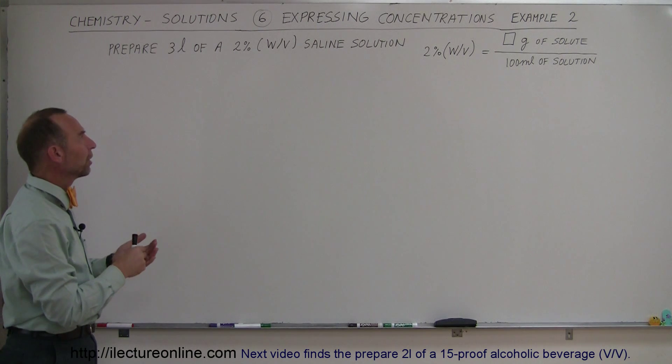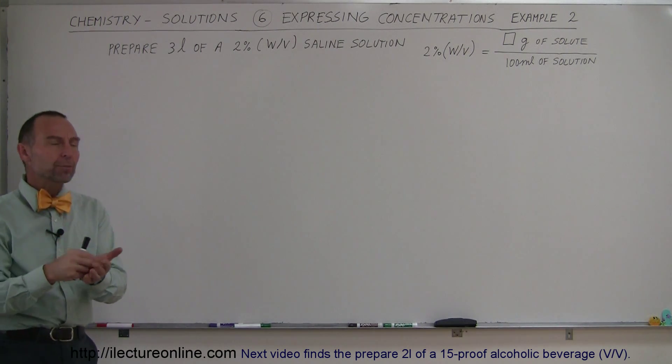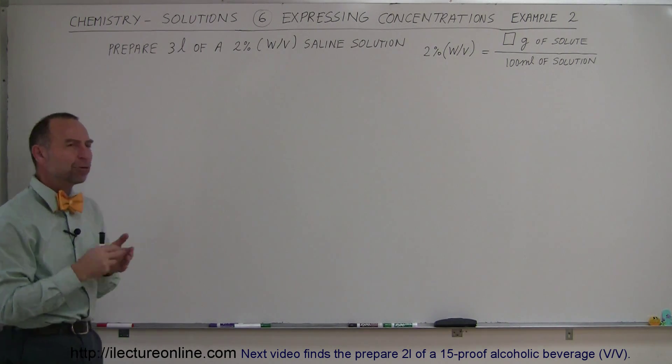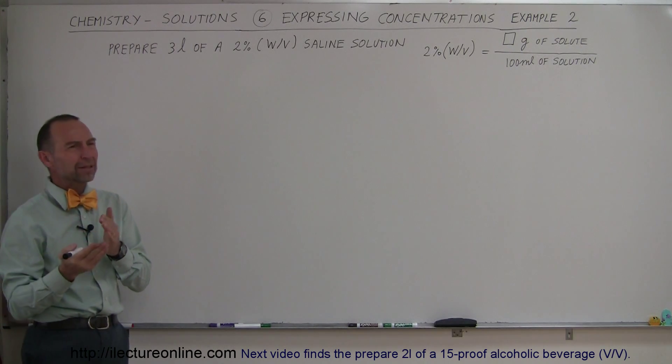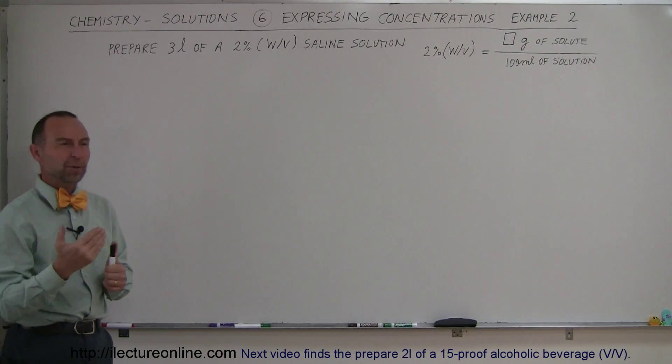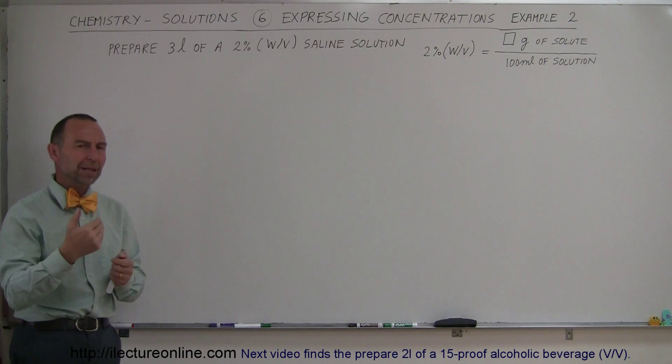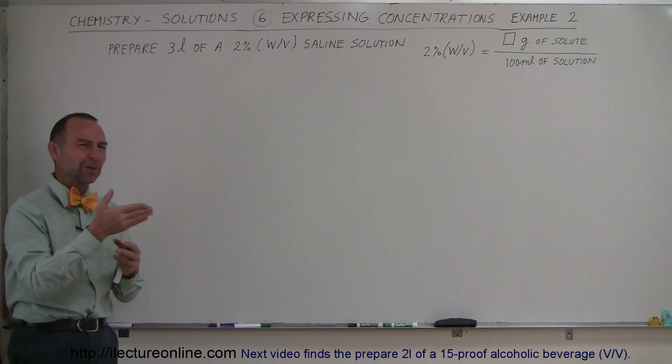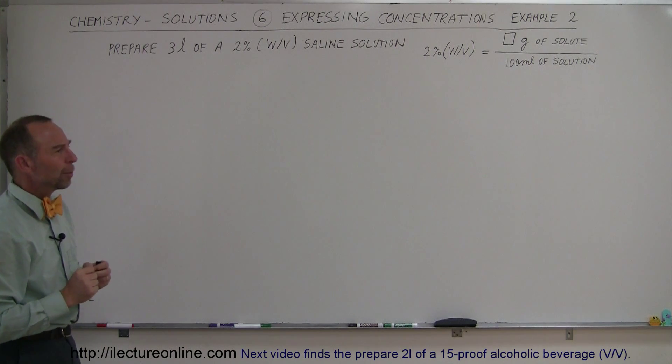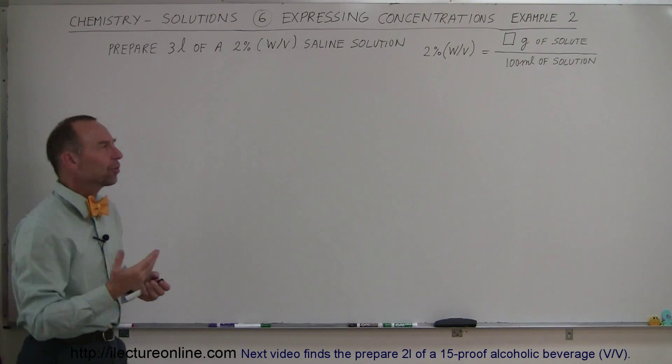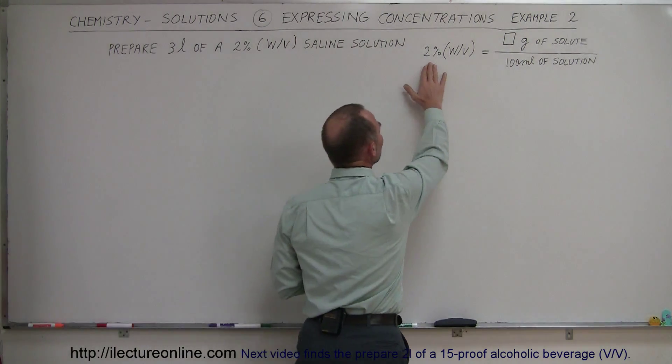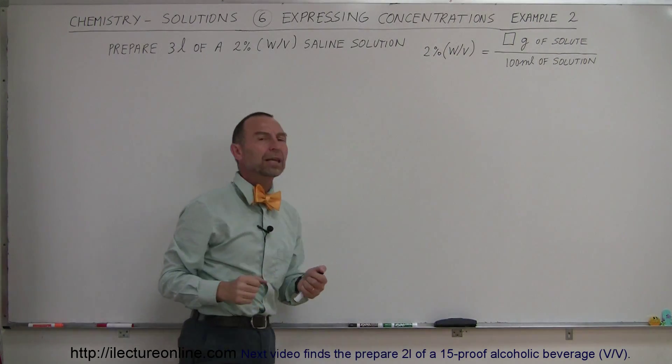That means that we want the weight compared to the volume to be a 2% ratio. Now of course when we compare weight to volume, weight is usually expressed in grams and volume is expressed in milliliters or liters. So when you have grams and liters those units don't match. They don't cancel out and so it's kind of weird to think about 2% being a ratio of grams to milliliters.